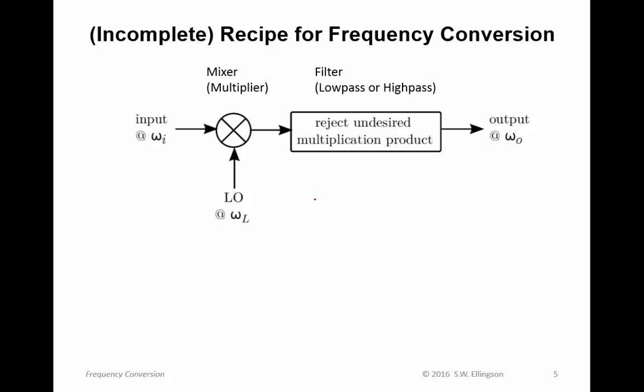Here's a recipe for frequency conversion — though it's incomplete; we'll add one more detail at the very end. The idea is that we have some signal at a center frequency of ω_i, and we have a mixer — which for our purposes is simply a multiplier. The other input is the local oscillator signal centered at ω_L. When we multiply those two together, we then reject the undesired multiplication product. When you multiply two narrowband signals together, you get signals at the sum and difference frequencies.